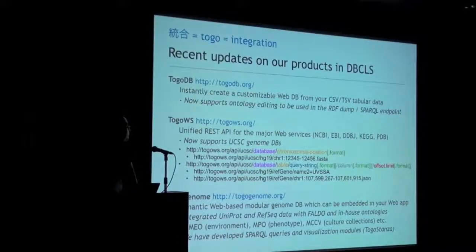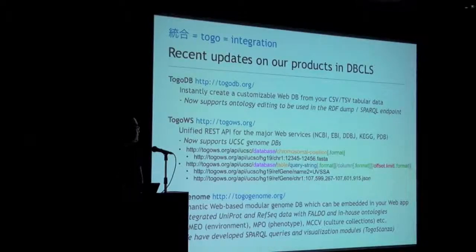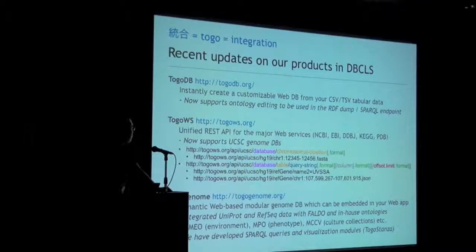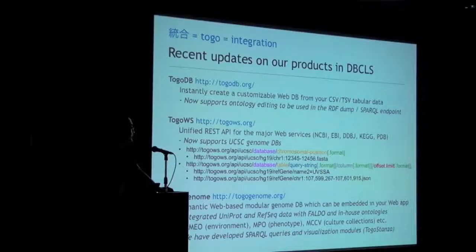Here is a part of our recent products developed at the BGIS. We have a Togopy system which can instantly create a customizable web database from your tabular data. It now supports in-place editing functionality to be used in RDF-DAMP or V-CAMP and also instantly publish the data in the SPARQL endpoint. The Togo Web Service is an integrated web service for unified access to the API for major web services provided by NCBI and UniProt. This year we added support for the UCSC genome database.